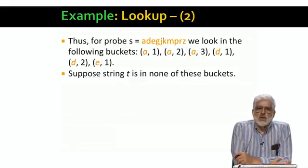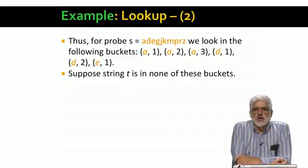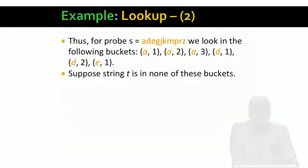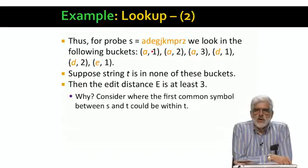We want to convince ourselves that when T is in none of these six buckets, then it can't be at distance 0.2 or less from string S. Then the edit distance between S and T is at least 3. To see why, consider what the first symbol T has in common with S can be.